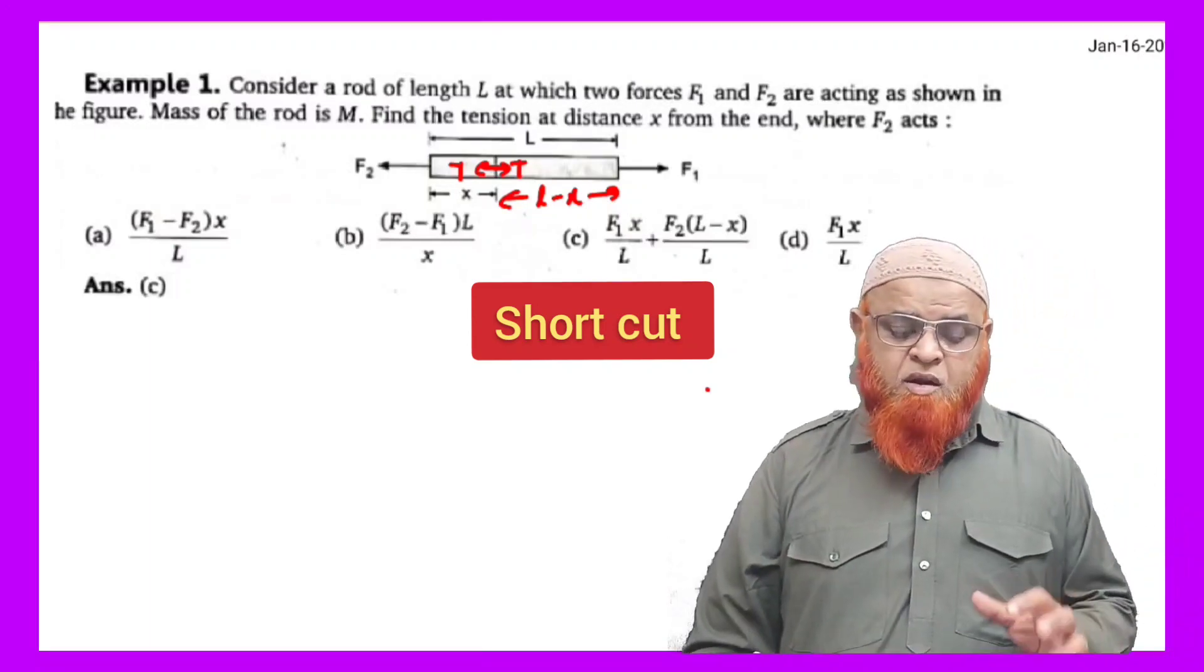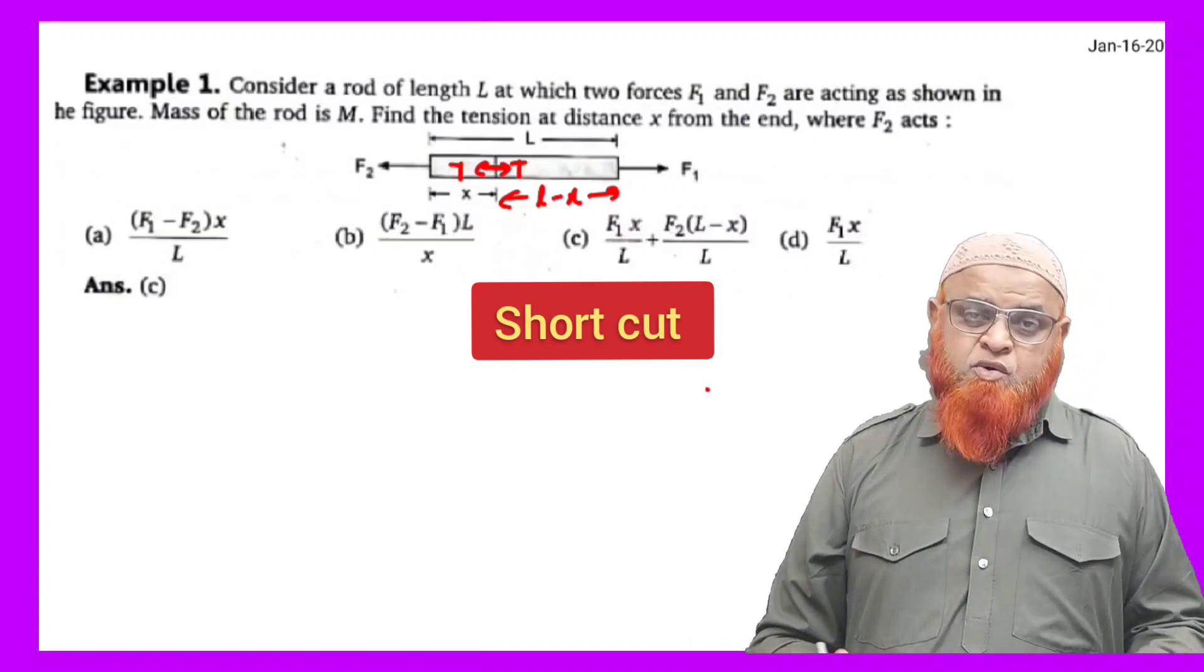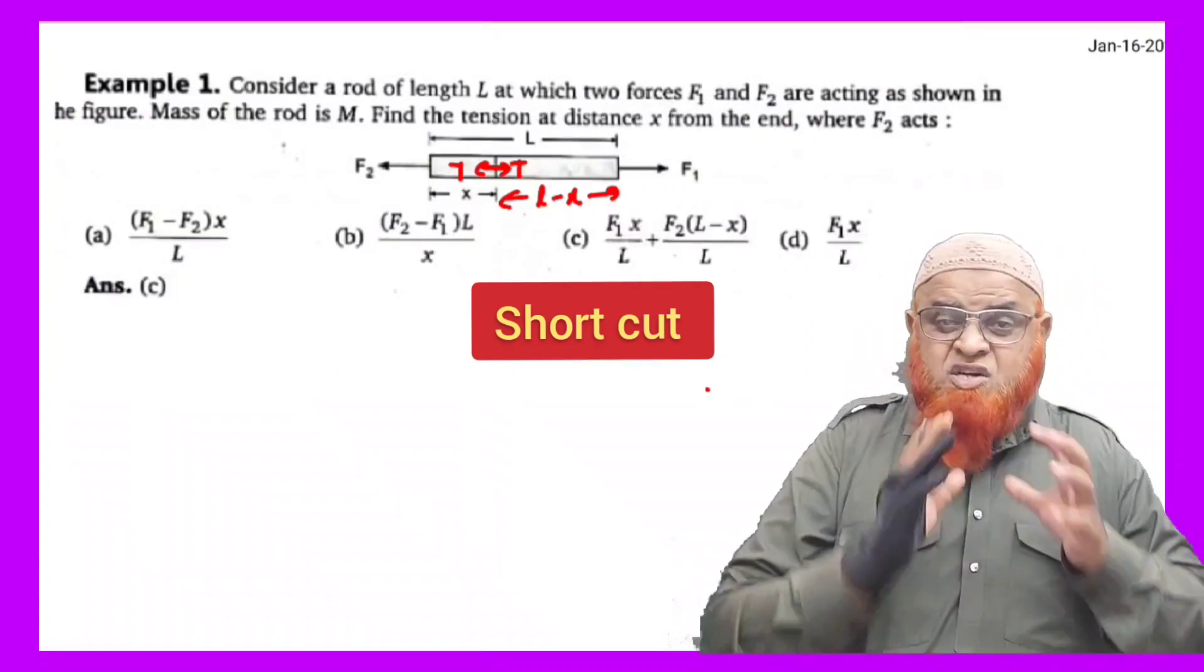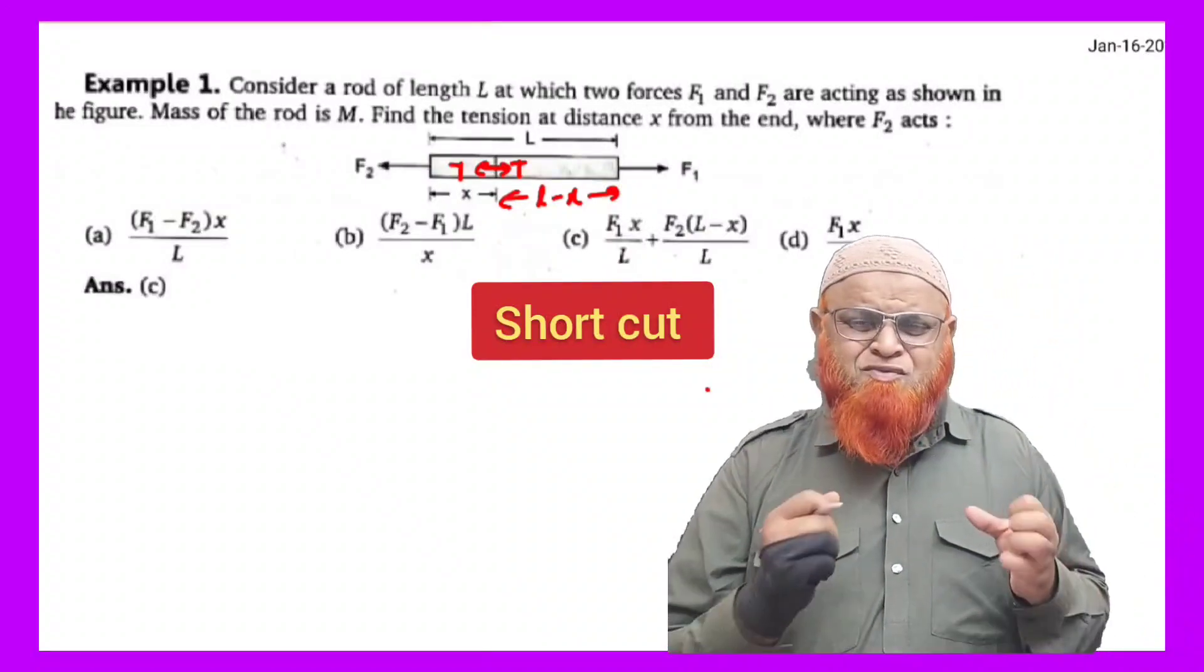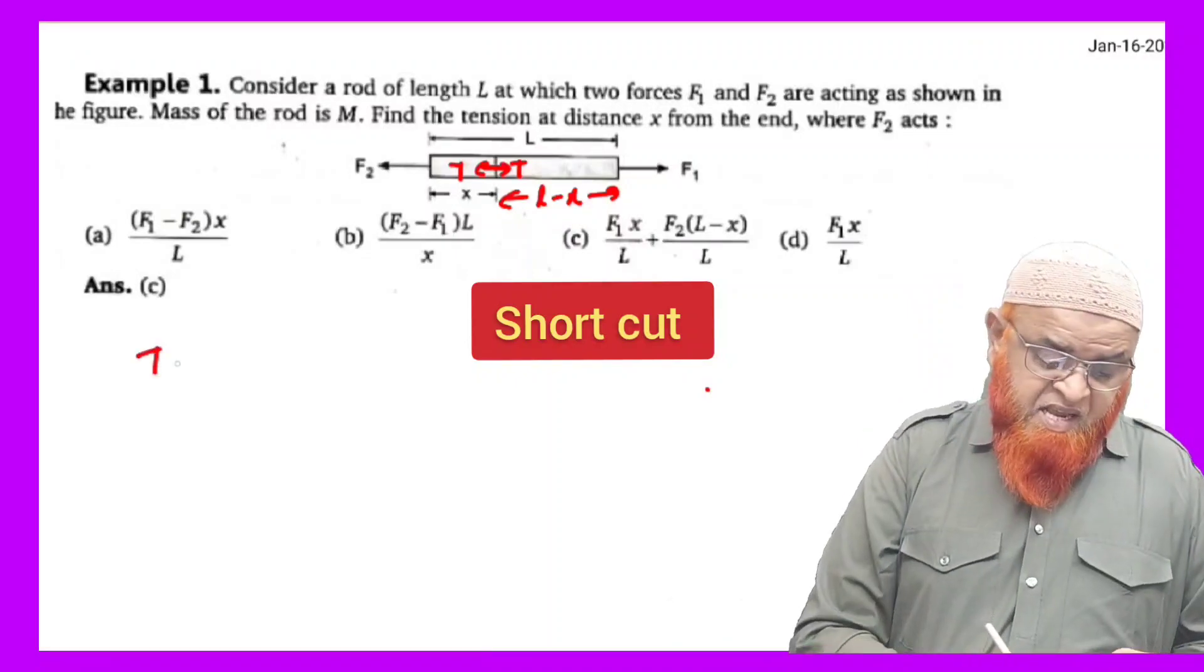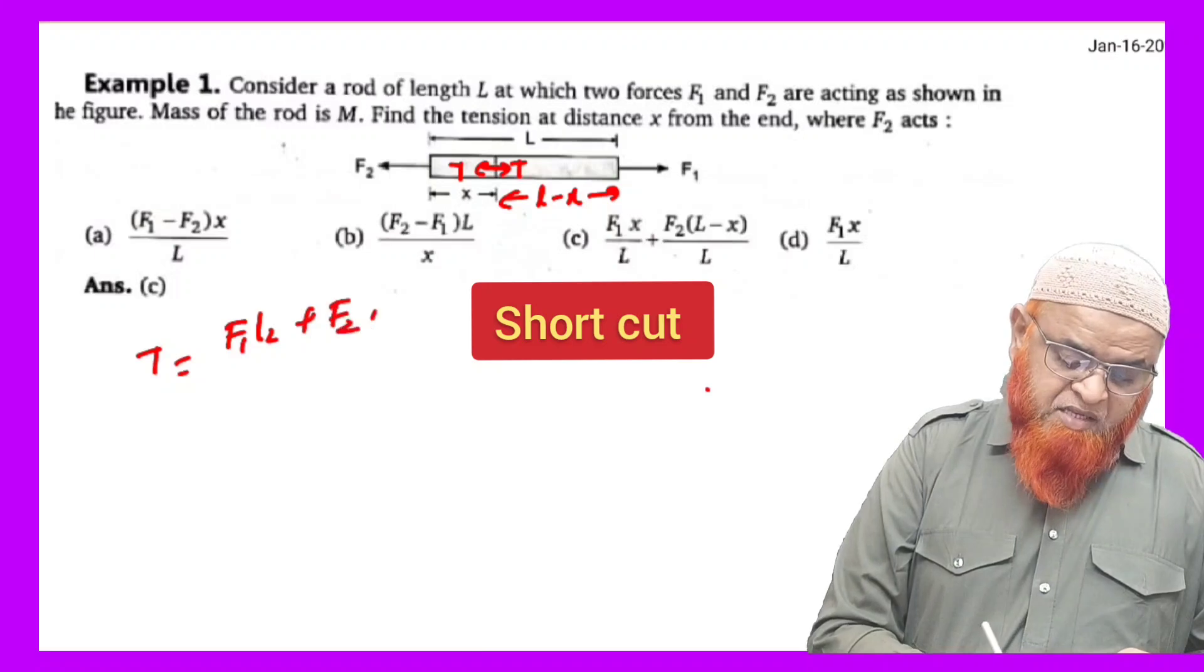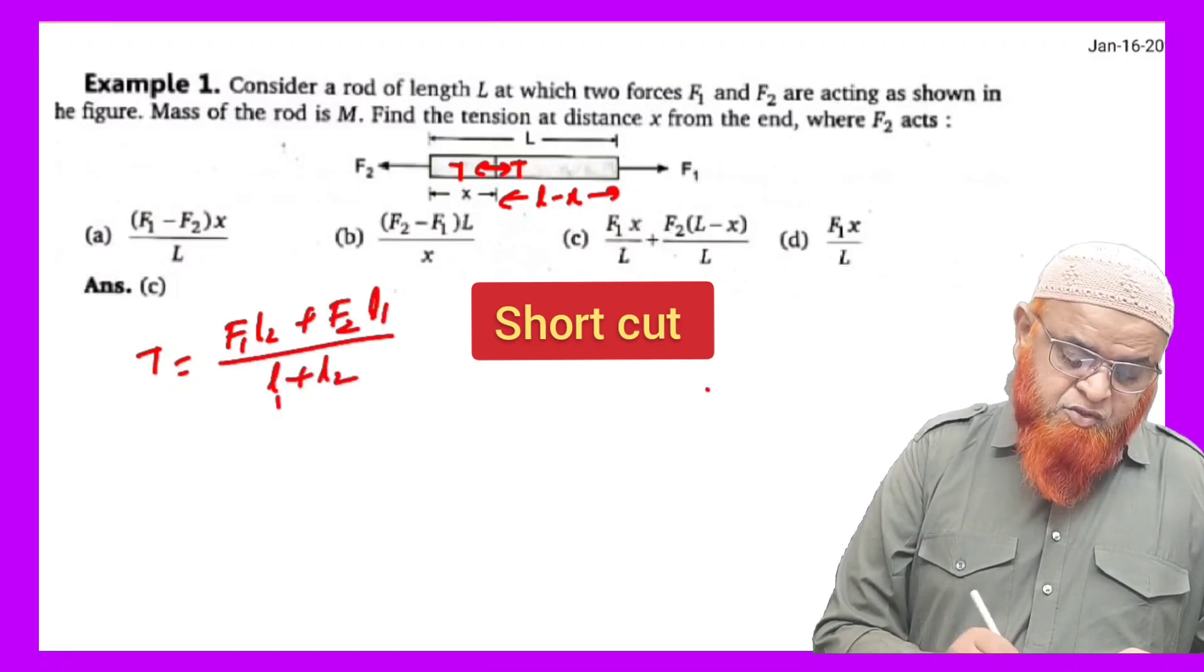So therefore now what I'm going to do here is you have to find out the tension. Instead of going for a free body diagram and wasting a lot of your time, it's very easy to find out the tension by using a shortcut method. That is, tension T is equal to F1 L2 plus F2 L1 by L1 plus L2 here.